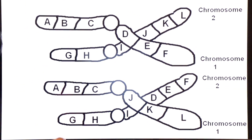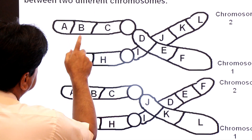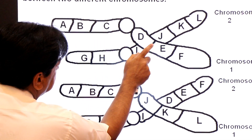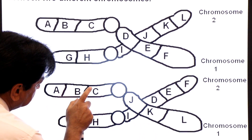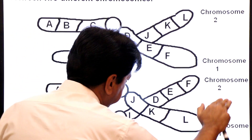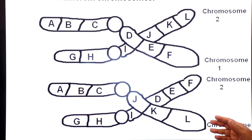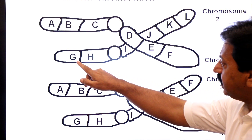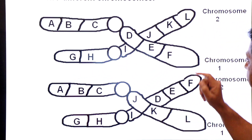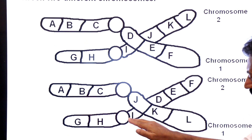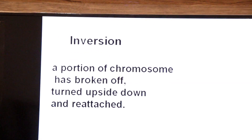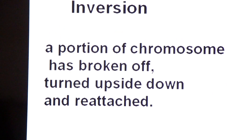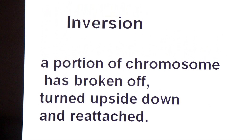After translocation, chromosome one sequence is now A, B, C, J, K, L — and chromosome two sequence is now G, H, I, D, E, F. Segments were exchanged between the two chromosomes.